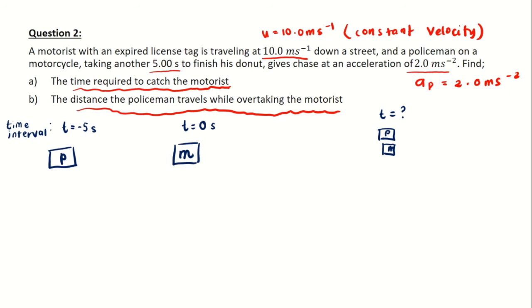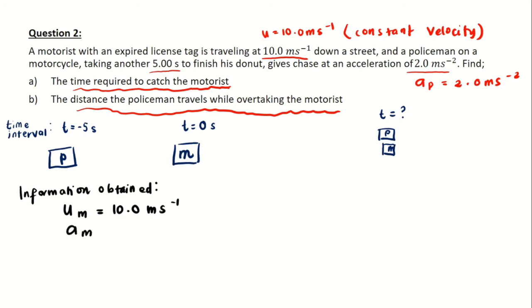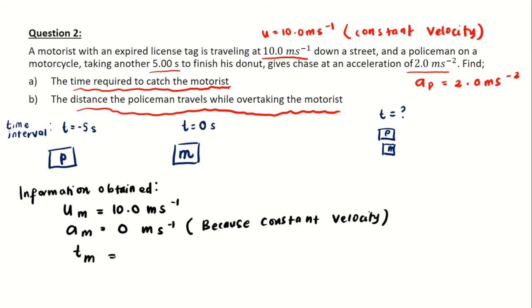Let's list the information. For the motorist: initial velocity u_m equals 10 meters per second, acceleration equals zero (constant velocity). The motorist's time is the policeman's time plus five seconds since the motorist started five seconds earlier. For the policeman: acceleration a_p equals two meters per second squared, and initial velocity is zero as he starts from rest.